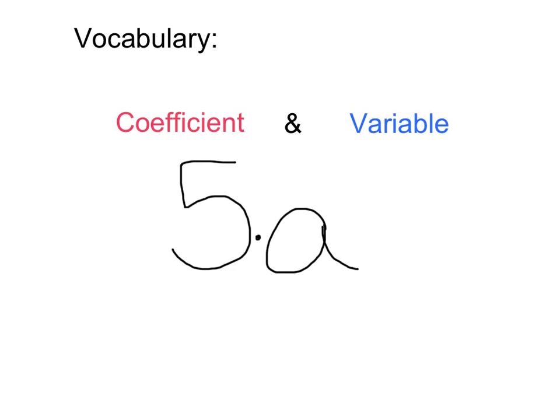We already know that the letter in our product is stated as a variable. It's our unknown number that varies. And then we have a number in the product which we call the coefficient. The coefficient is really important because it lets us know how many we have of our variable. So we have 5a's here in this variable.